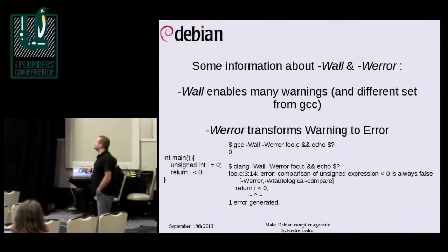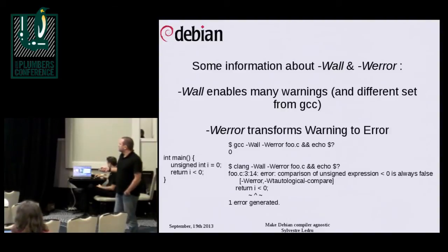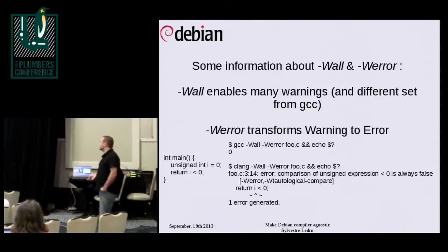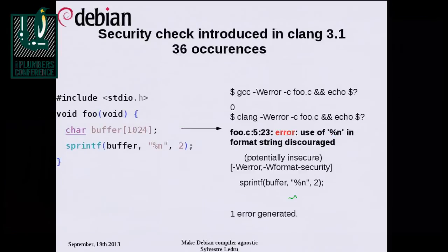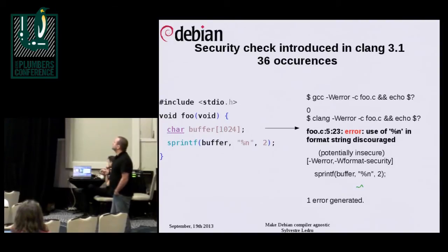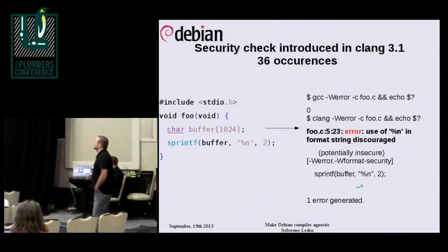For those not familiar: -Wall enables a lot of warnings, and -Werror transforms warnings into errors. Using the crappy unsigned-under-zero example again — with -Werror, I get an error where I should only get a warning. The big increase in failures between 3.0 and 3.1 is due to things like a security check the Clang developer added. He considers displaying a warning a security issue, but since many upstreams use -Werror, it fails the build.